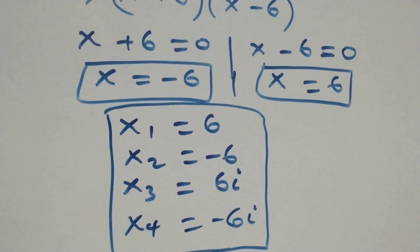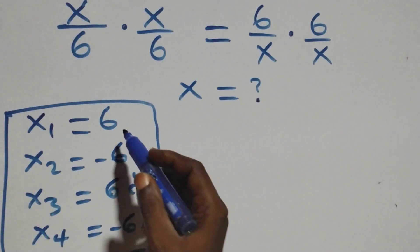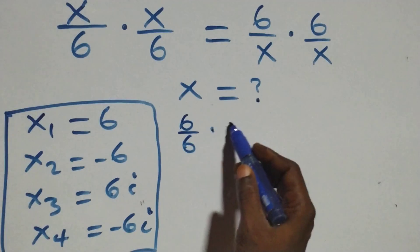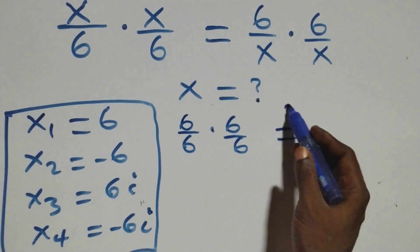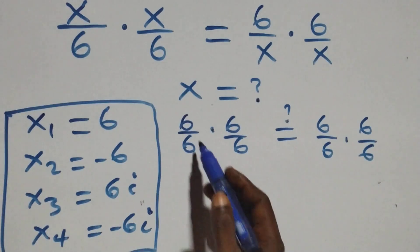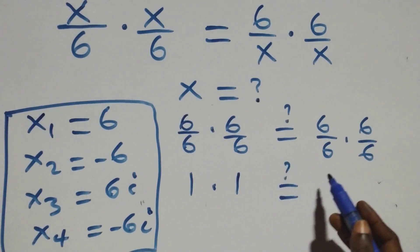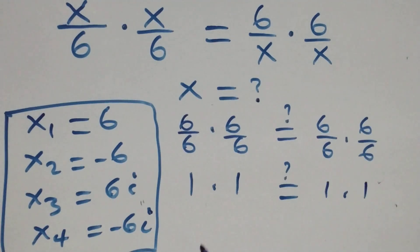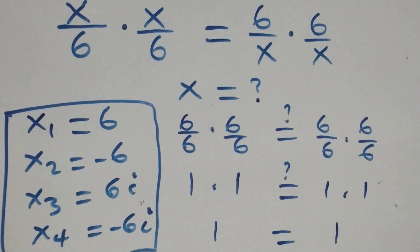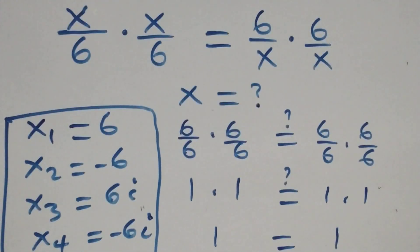Let's check if these satisfy the given problem. Substituting x = 6: we get 6/6 × 6/6 = 6/6 × 6/6. Since 6/6 = 1, we have 1 × 1 = 1 × 1, which is 1 = 1. Left-hand side equals right-hand side, so x = 6 satisfies the equation.